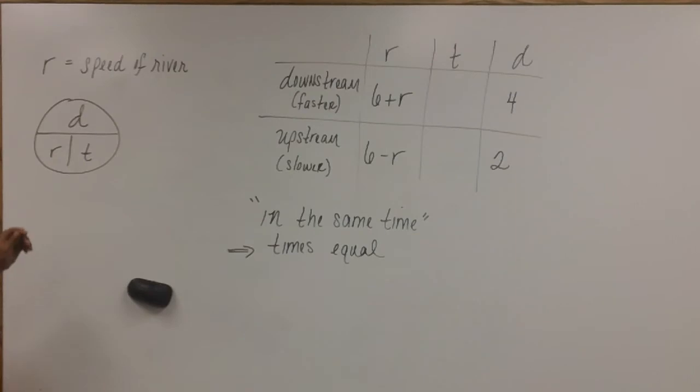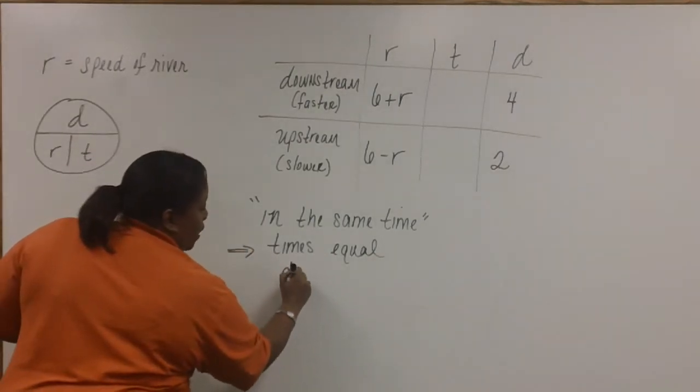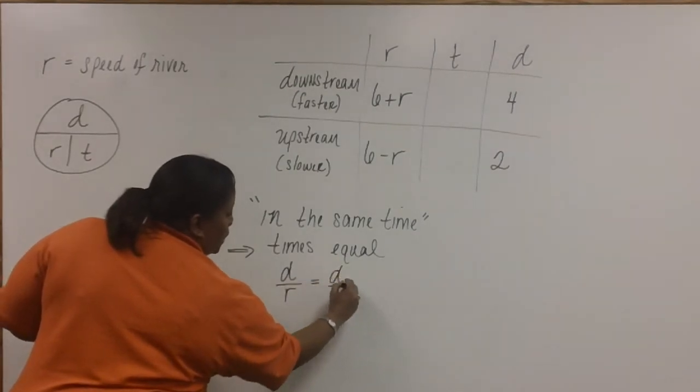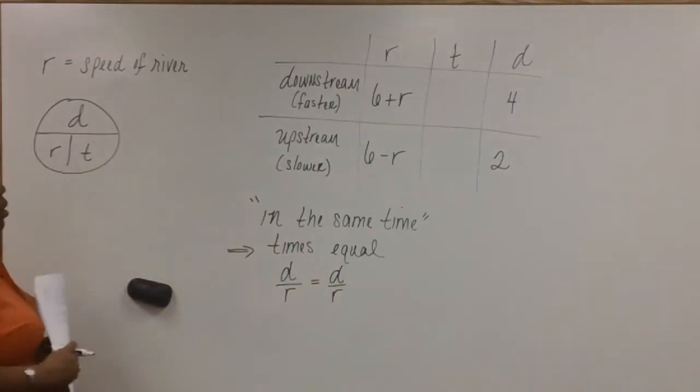So, when we set it up, we need to solve for time. When you cover up T, notice that you're left with D over R. So, time is equal to D over R. So, when we set it up, we'll have D over R equals D over R.